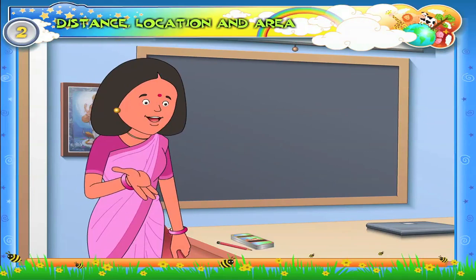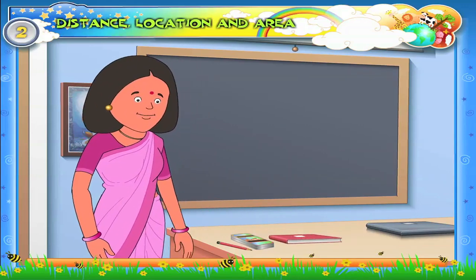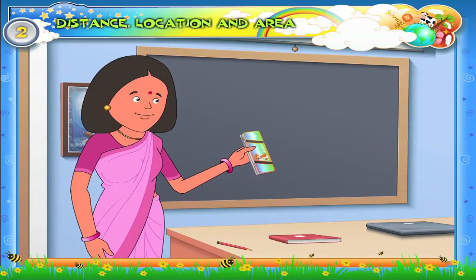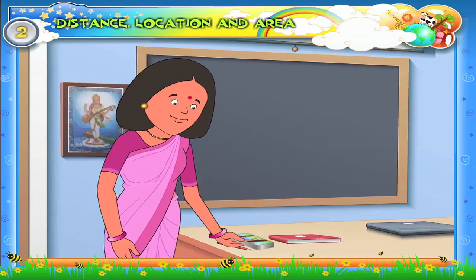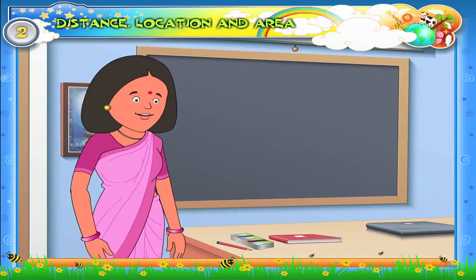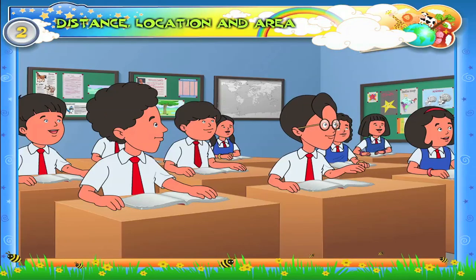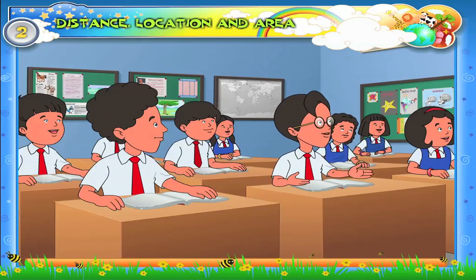Children, now we shall have some activities. This is a book — I place this on the table. This is a compass box — I place this next to the book on the table. This is a pencil — I place this next to the compass box. Raj, look at these three objects and tell me which of them occupies more space and which occupies less space. Madam, the book occupies more space, the compass box occupies less space, and the pencil occupies the least space.